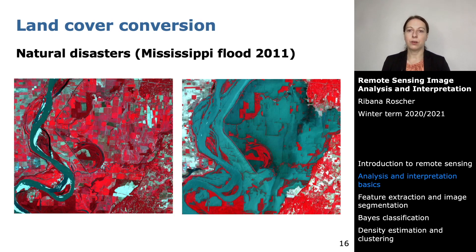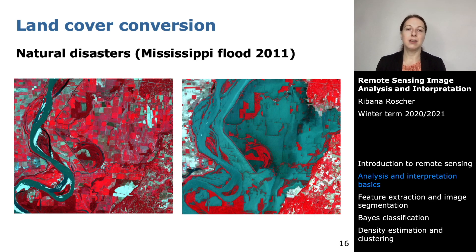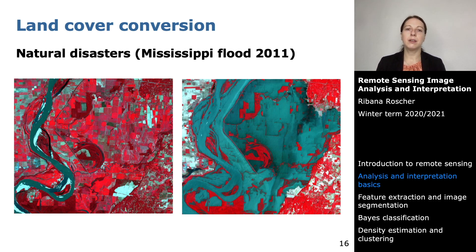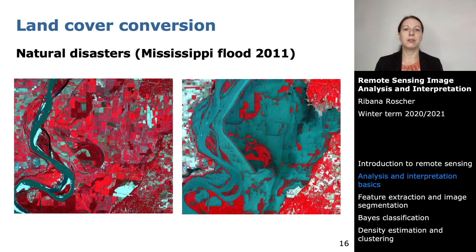One example of land cover conversion is what happens during a natural disaster. Here, two satellite images in pseudocolor representation show the Mississippi flood of 2011. This disaster was caused by late winter and early spring snow melt and heavy rain events, along with the largest outbreak of tornadoes ever recorded, causing the Mississippi to swell in April. Looking at specific image areas, you can see a conversion from urban area to river or water.